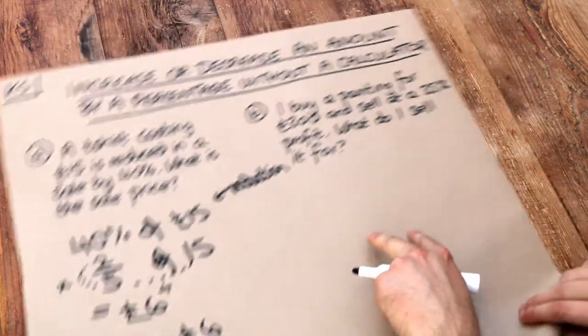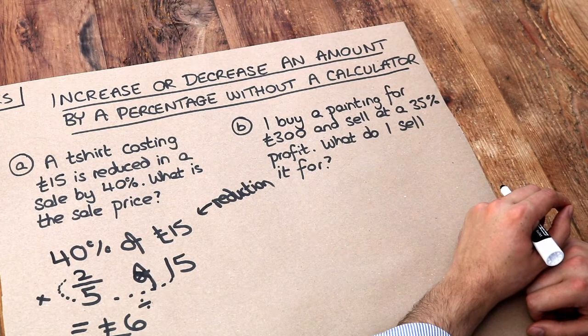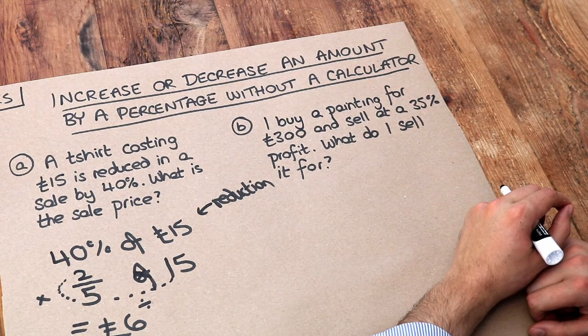What about this second one? I buy a painting for £300 and sell it at 35% profit. What do I sell it for?